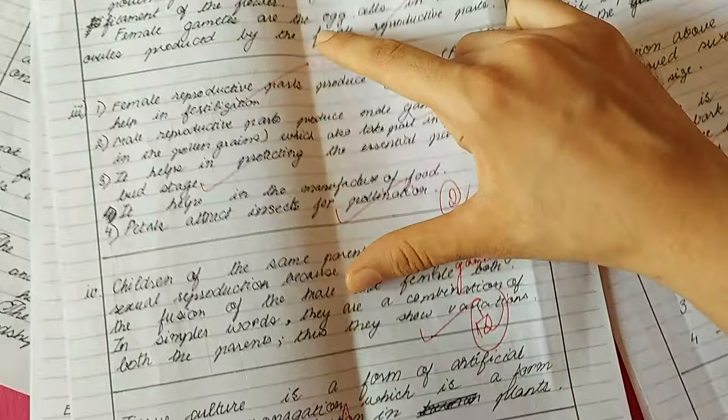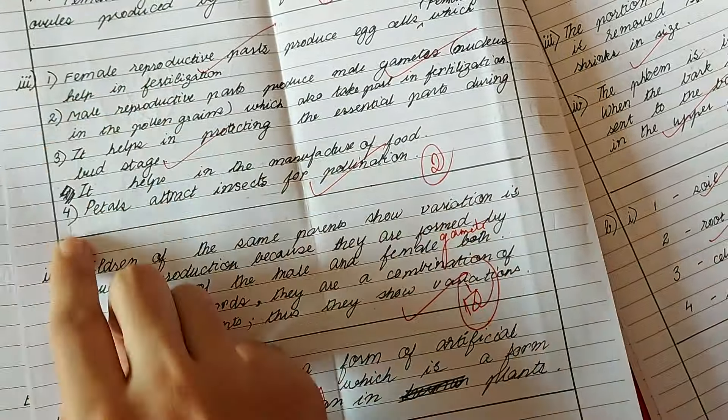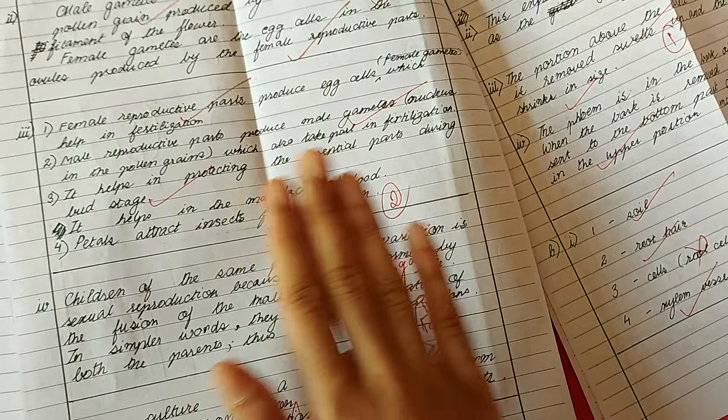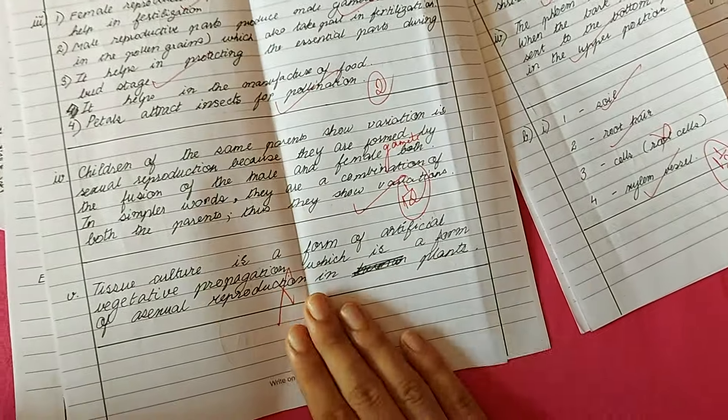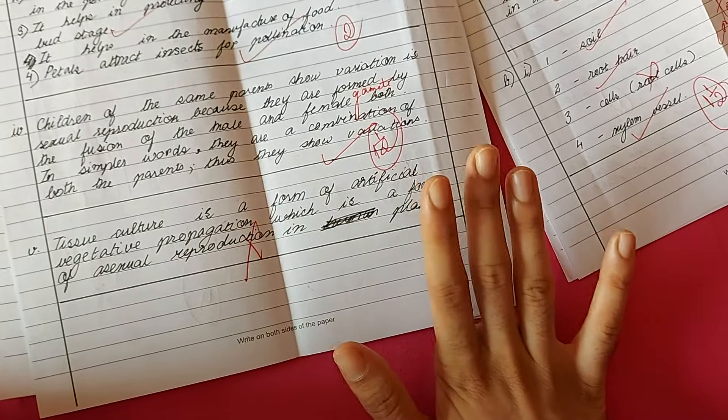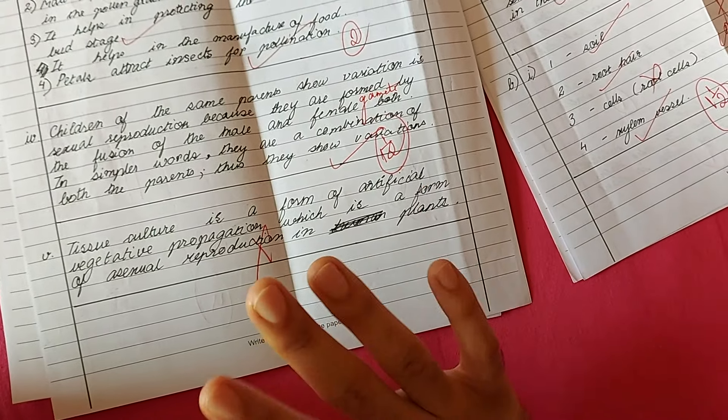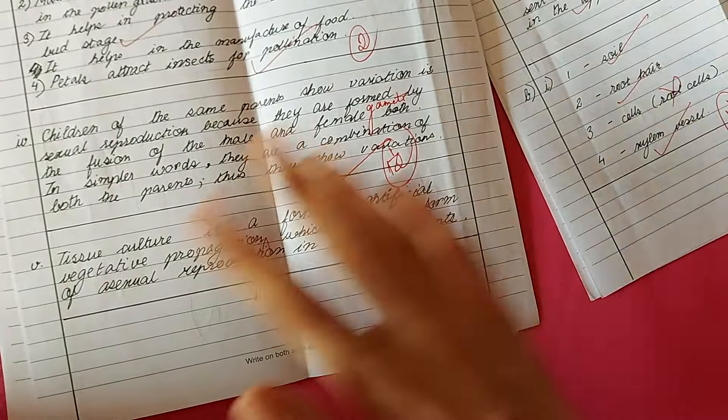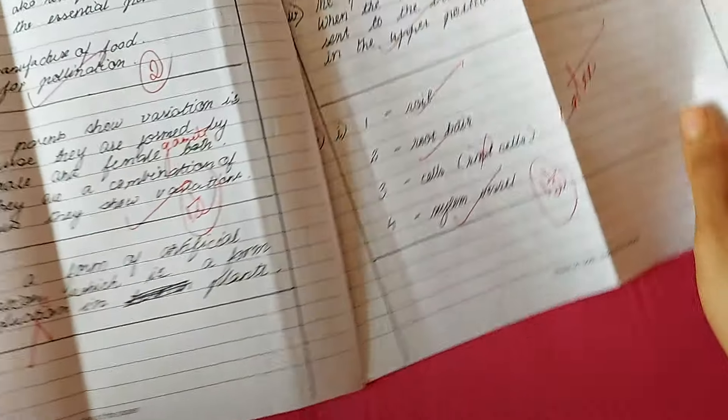For long answers, point form can be used. Just try to avoid cuttings like this because it can lead to you losing marks. Don't leave out any answer. Even if you don't know the answer, just write something. You might not get marks for it, but you might. If the teacher is happy, he might just give you half a mark or something.